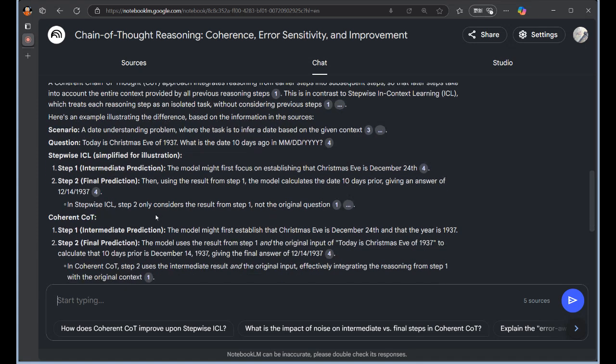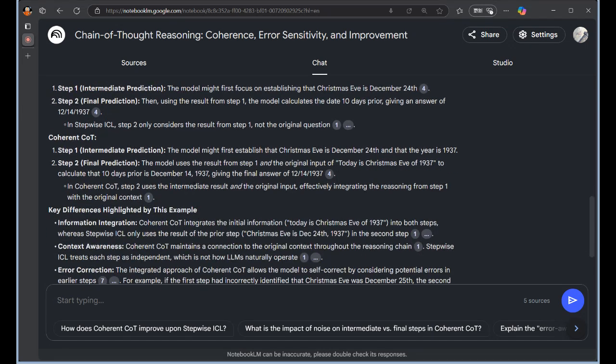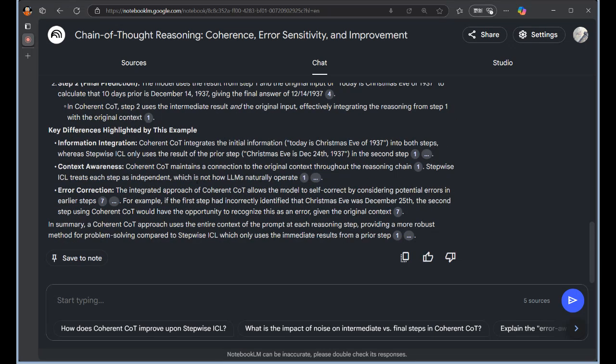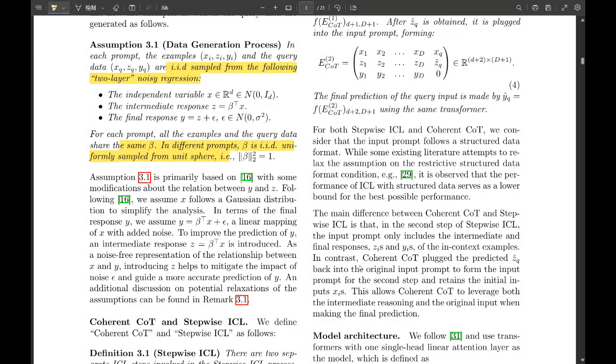But the surprising finding is that CoT is most sensitive to errors in those intermediate reasoning steps. Oh, wow. So not the start. Nope. But the middle? The middle. Exactly. That's counterintuitive. It is. It's like a domino effect. One wrong step throws off the whole chain. Exactly. One mistake early on amplifies down the line. So those middle steps, that's where the real magic and the potential for disaster. Absolutely. This feels huge for anyone actually working with LLMs. Oh, it is. It's like knowing exactly where to focus your attention for the best results. Precisely.